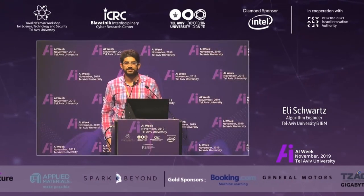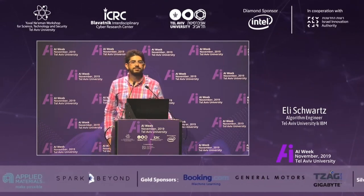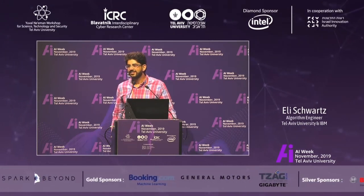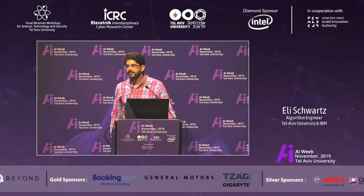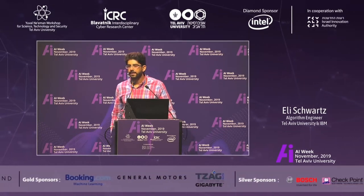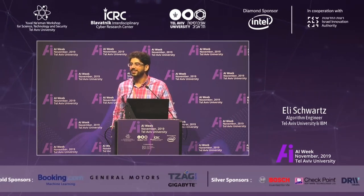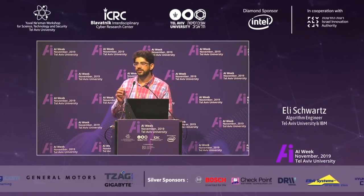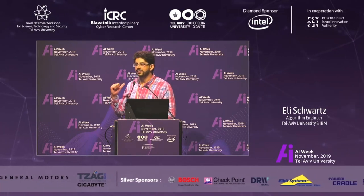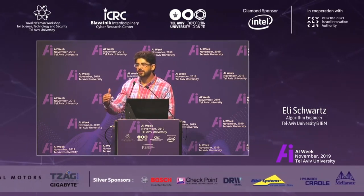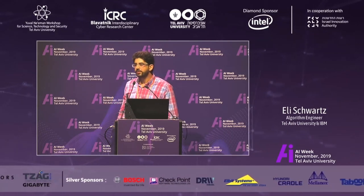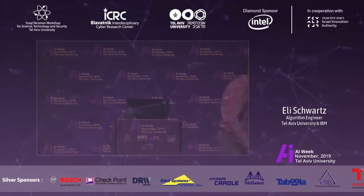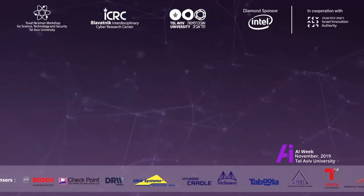Thank you, Eli. Any quick questions? You did lots of experiments with many classes — how was the variance between the classes? Are there classes that are more difficult to learn from just a few examples? I'm not sure how it is exactly, but the most important question is how close the novel class is to our training classes. The larger the shift between the domains, performance will obviously suffer.